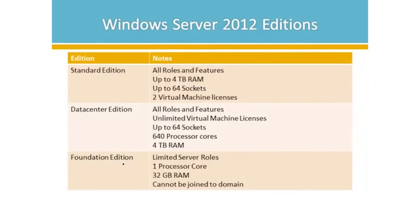Let's go through the Windows Server editions. There are licensing and cost differences with each edition, so you pick the one that closely maps to what you need. Standard edition is the most common — you get all roles, all features, up to 4 terabytes of RAM, and up to 64 sockets. With Standard edition, if you install the Hyper-V role and your hardware is Hyper-V ready, you can use that same license to create two additional virtual machines in the Hyper-V console — essentially buying one server and getting three.